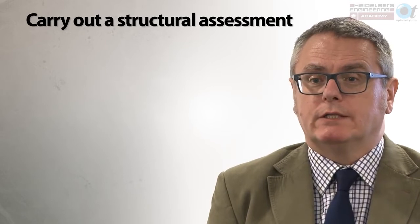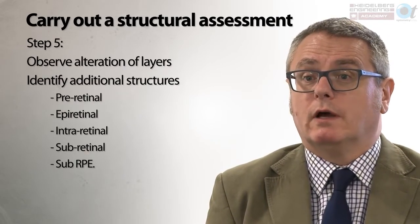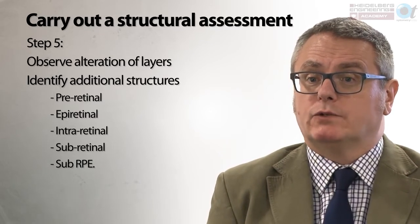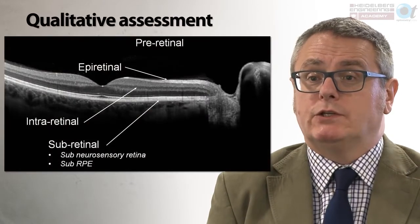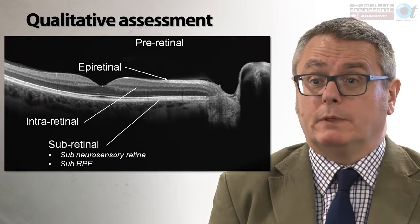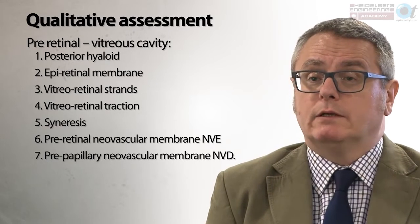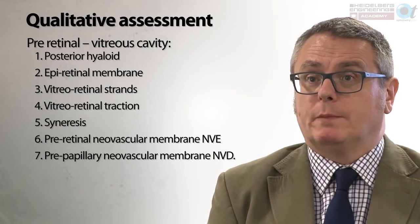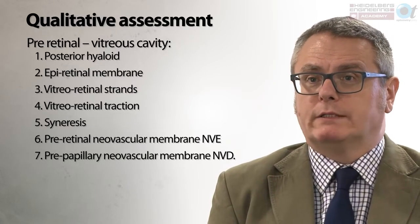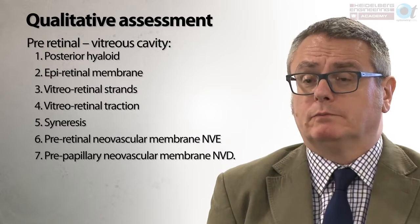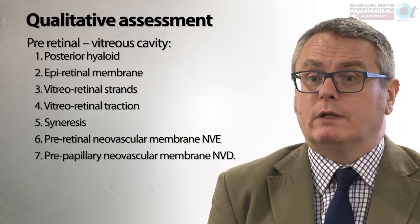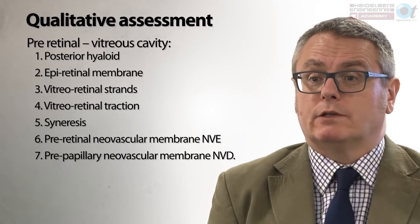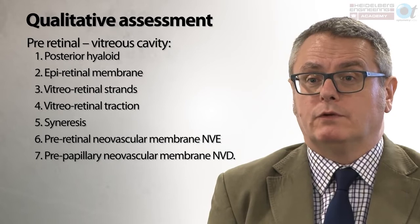Then carry out a structured assessment of the scans, observing alteration to normal retinal structure and identifying additional structures in a pre-retinal, epiretinal, intraretinal, and subretinal location — looking for changes within the vitreous cavity, on the surface of the retina, within the neurosensory retina, underneath the neurosensory retina, or underneath the RPE. The vitreous cavity should be minimally reflective; vitreous is approximately 98% water and 2% collagen, so any reflectivity should be viewed as abnormal. The most likely structure seen is the posterior hyaloid associated with posterior vitreous detachment, but epiretinal membranes, vitreoretinal strands, traction, syneresis, and neovascularization may also be visible. Changes in density such as the premacular bursa or space of Martegiani can also be detected.